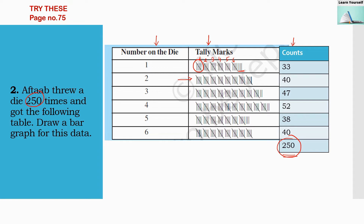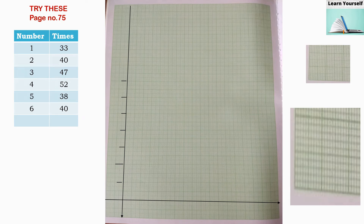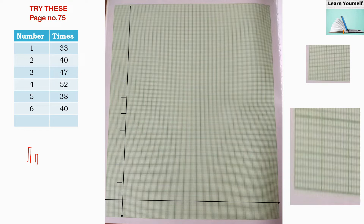We have to draw a bar graph. We are going to draw a bar graph where the numbers 1 through 6 represent the faces of the die. Number 1 on the die appeared 33 times, number 2 appeared 40 times, and so on. Number 6 appeared 40 times. For this we require a graph paper — this graph paper is 10 by 10.